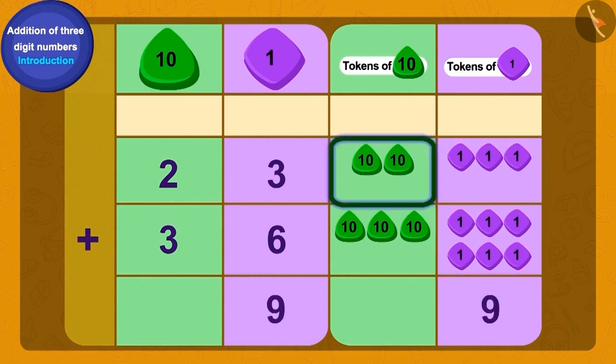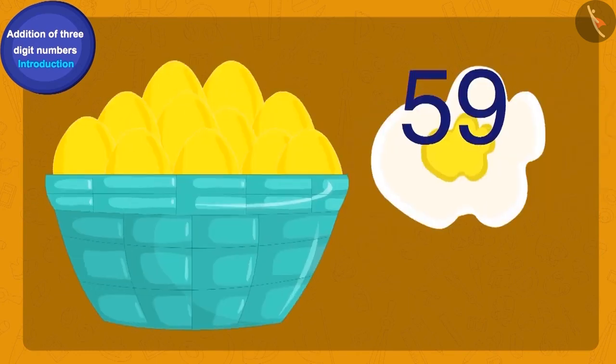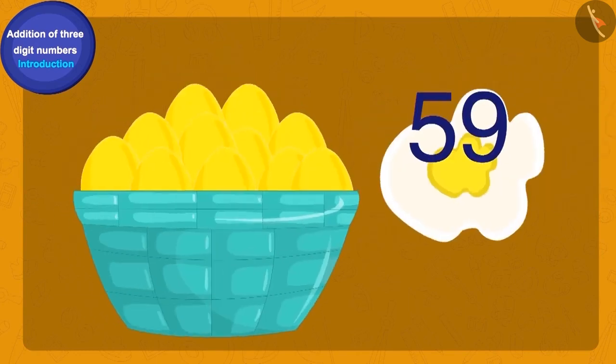Now if we add two ten tokens and three ten tokens, how many do we get? Perfect! Five of ten tokens. Thus Babban had a total of 59 gold eggs.